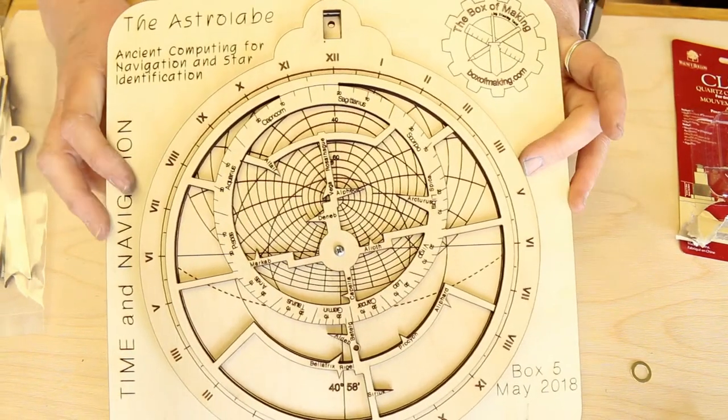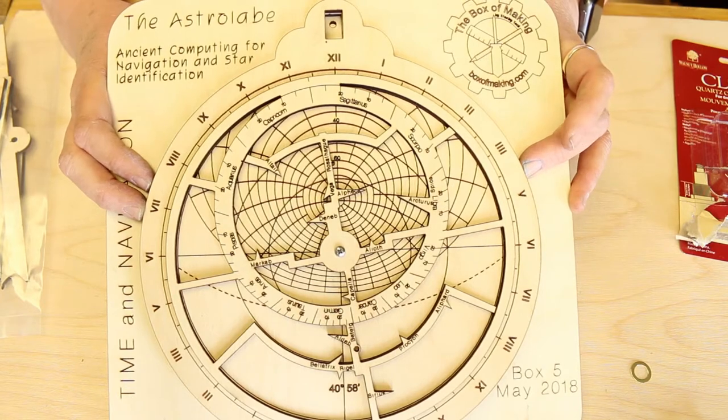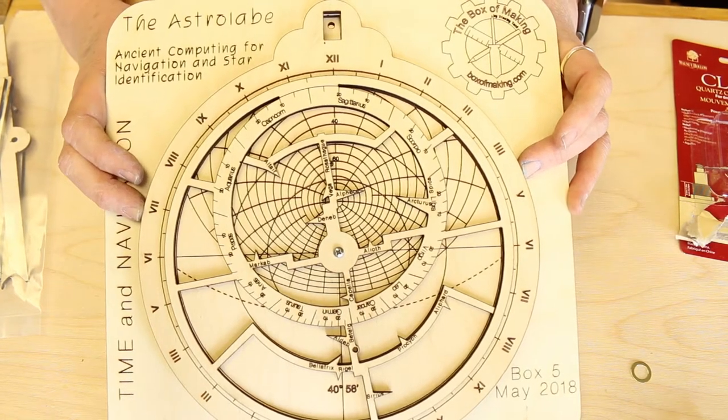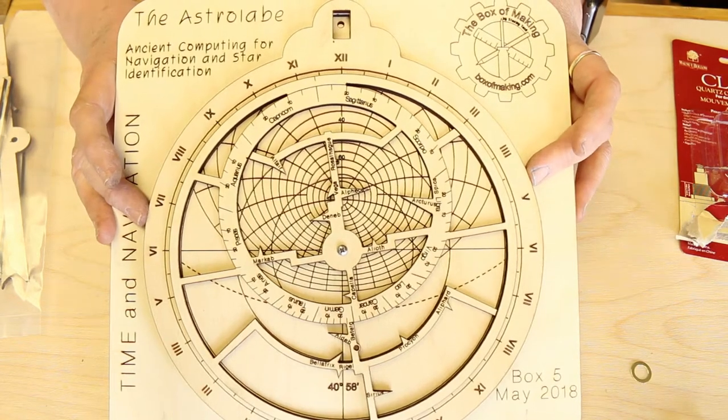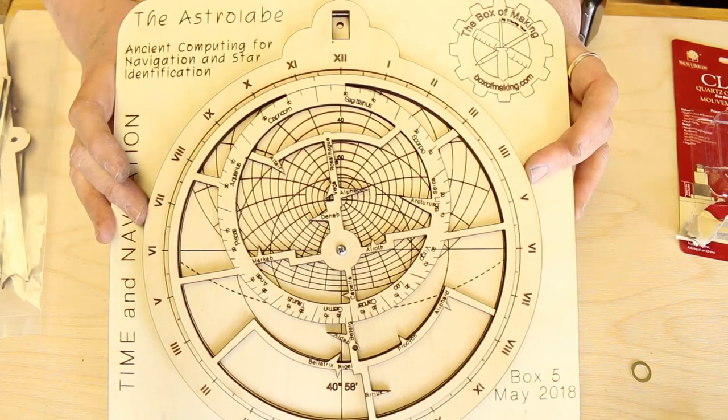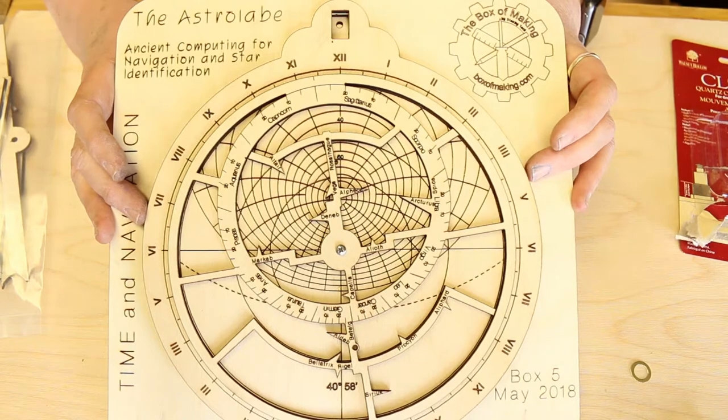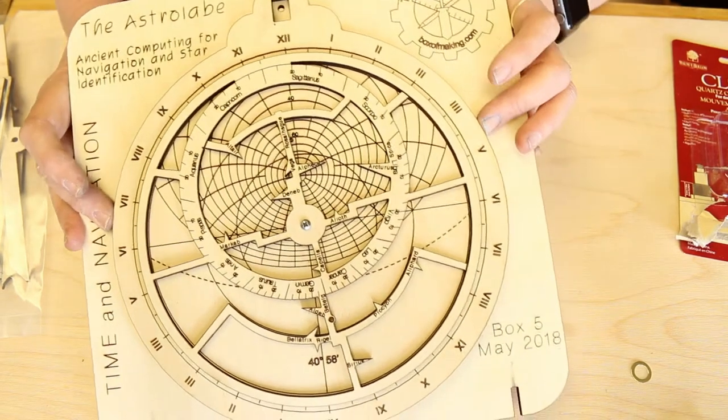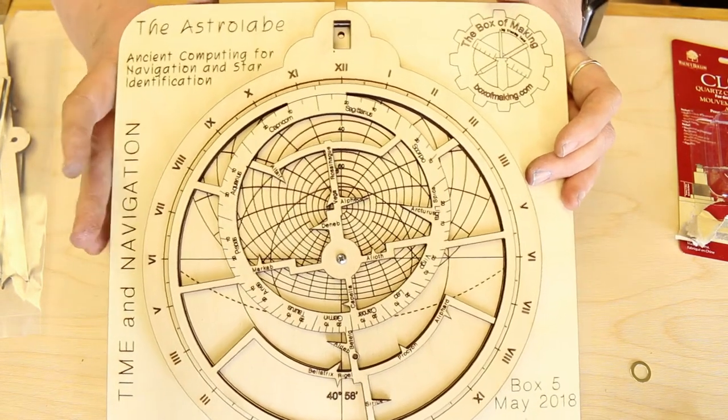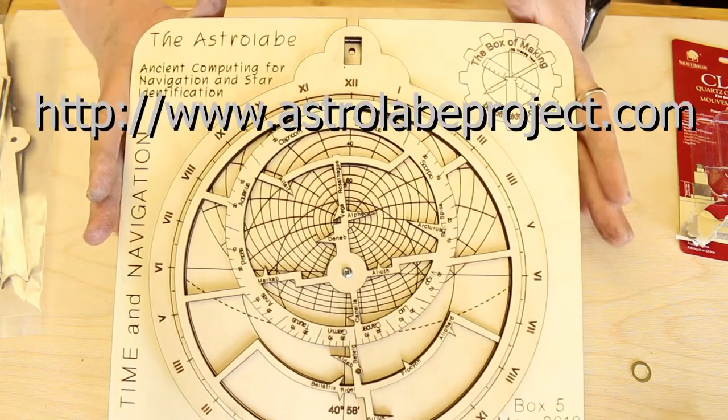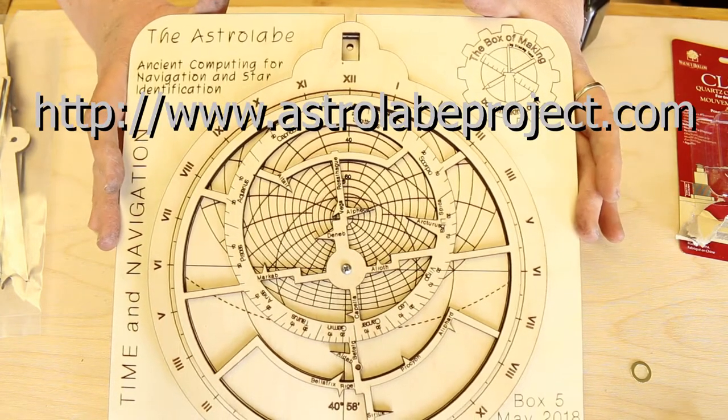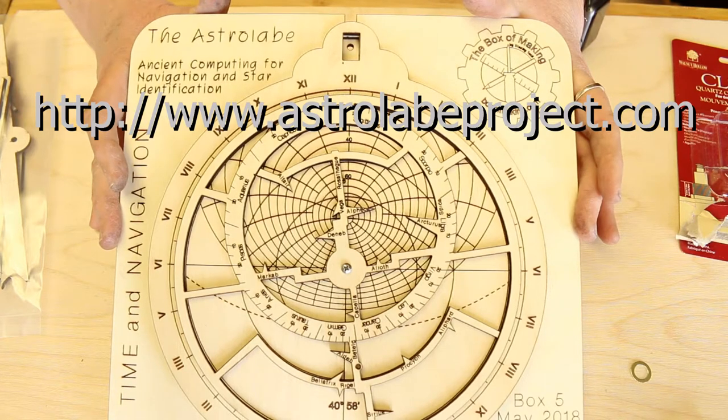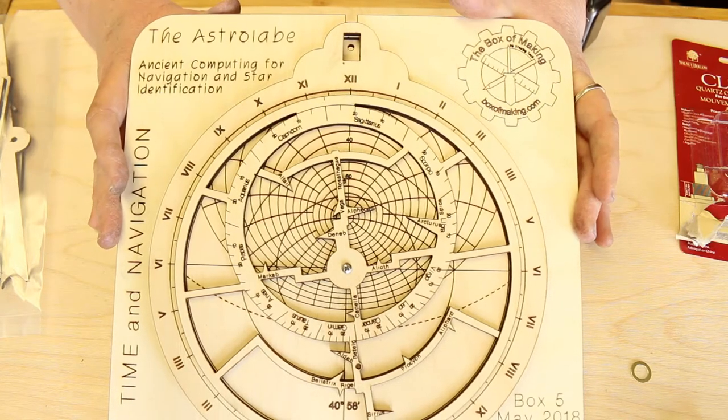An astrolabe is an ancient navigation tool that was used to identify the stars, elevation above sea level, all kinds of other interesting things. I am not an expert on astrolabes, but there's a really cool website called theastrolabeproject.com that provides a way to design your own astrolabes, has patterns for them, a computer that will generate them.